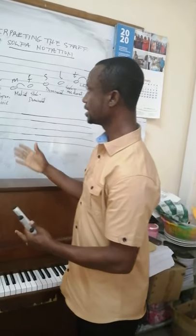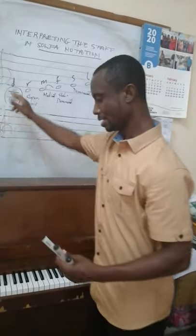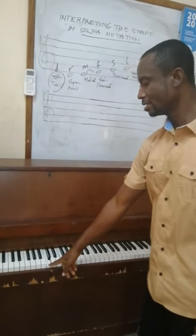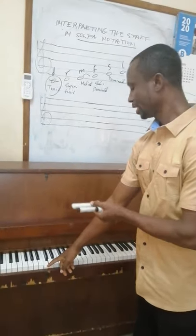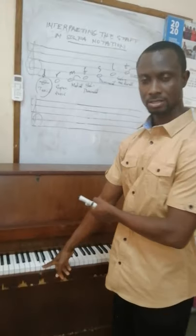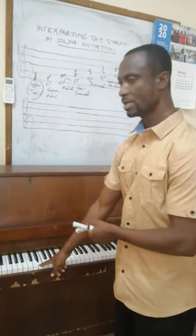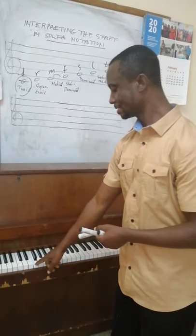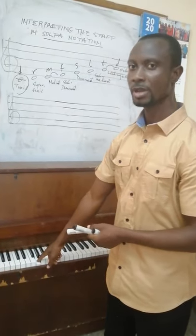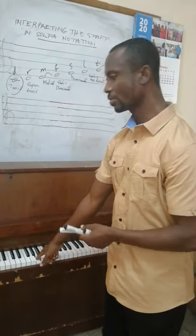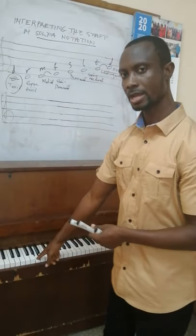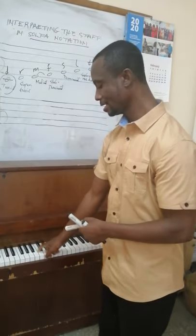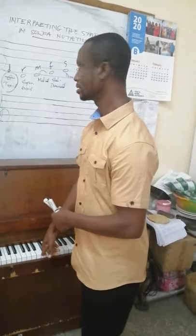What is the implication? It means that if we are starting on C — the white key before the two black keys — that is do. The next one, which is supertonic, is re. The next, which is mediant, is mi. The next, subdominant, is fa. The next, dominant, is so. The next, submediant, is la. The next, the leading note, is ti. And then the octave is do.